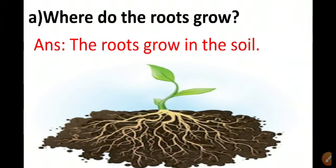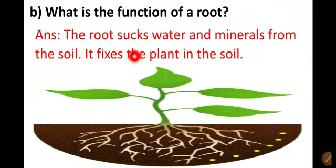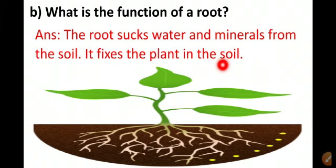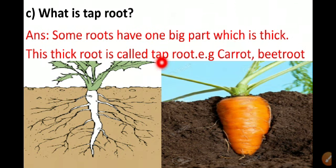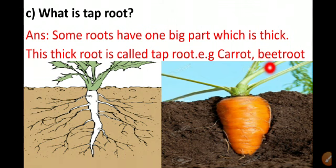I hope you all can understand these questions and their answers. Now I am repeating them. First question: where do the roots grow? The roots grow in the soil. Second: what is the function of a root? The root sucks water and minerals from the soil and it fixes the plant in the soil. Third: what is tap root? Some roots have one big part which is thick; this thick root is called tap root. Examples are carrot, beet root, turnip, and radish.